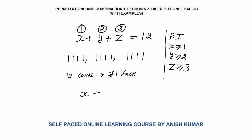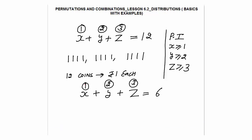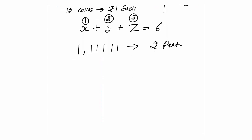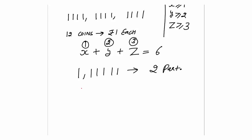So what I have left: x plus y plus z equals 6. I have already given 3 coins to z, 2 coins to y, and 1 coin to x. Now I will apply the partition method. I have 6 coins and 3 students, so I will apply 2 partitions. These 2 partitions will divide 6 coins into 3 parts, where each part can be 0.